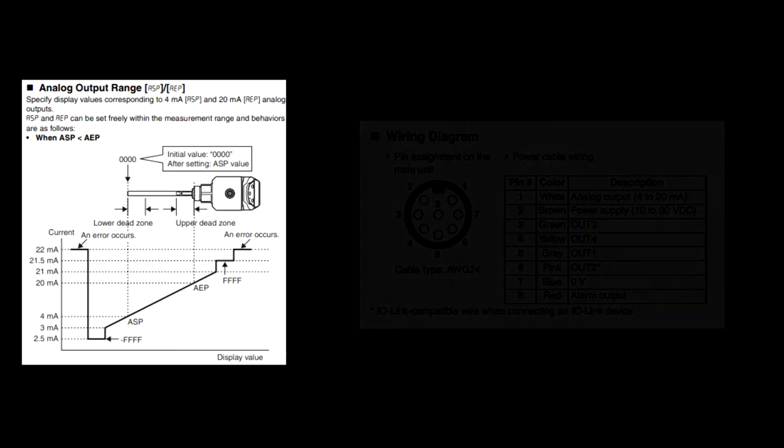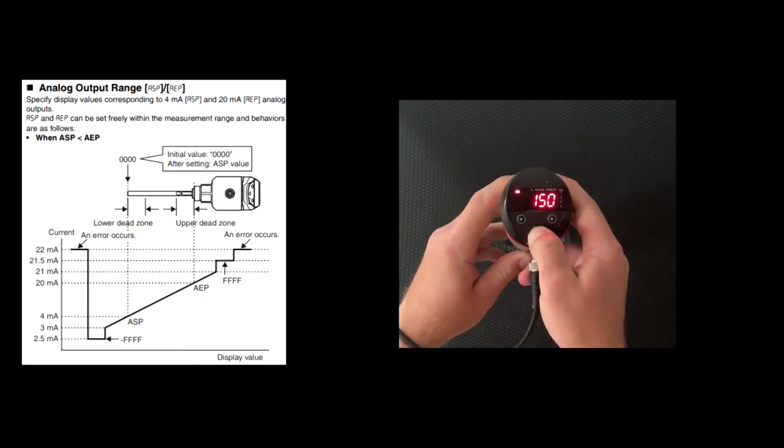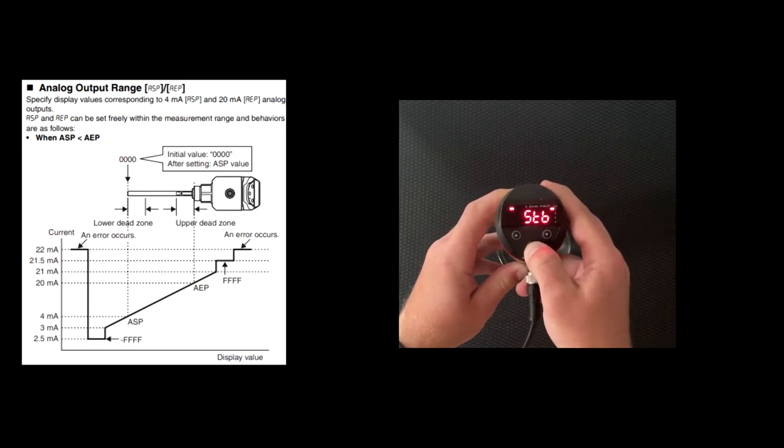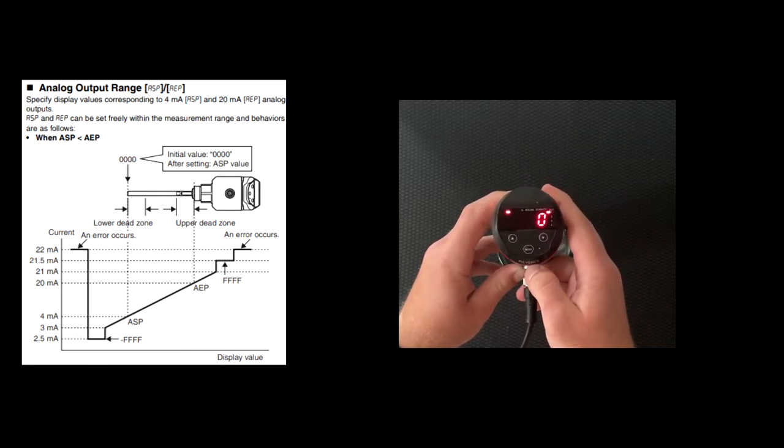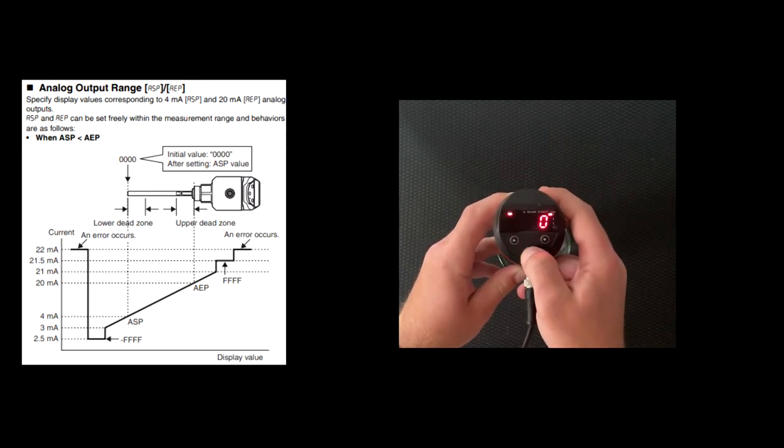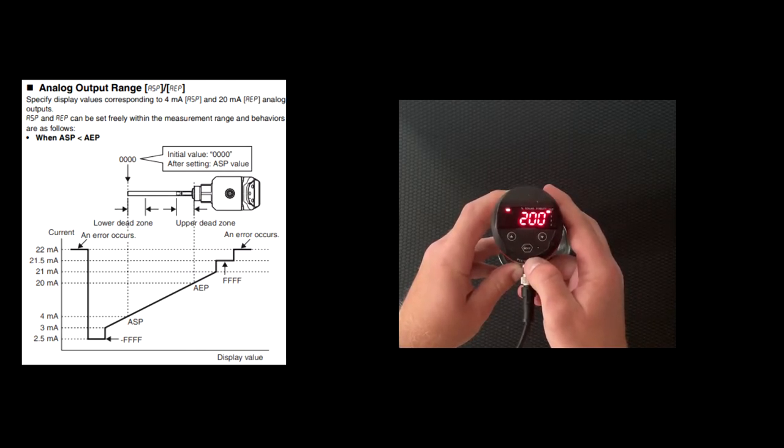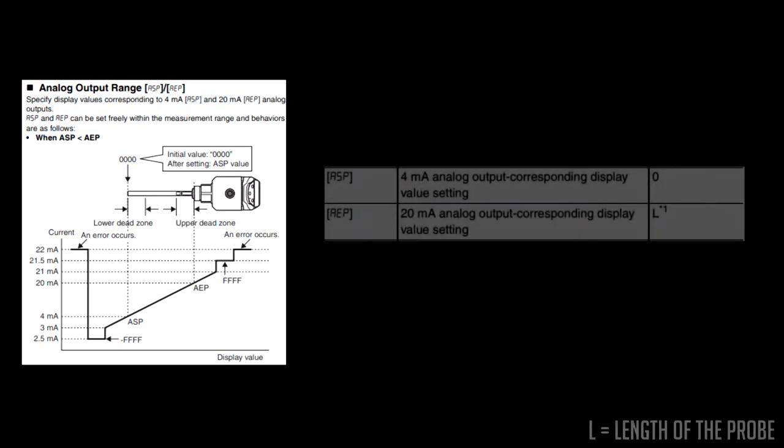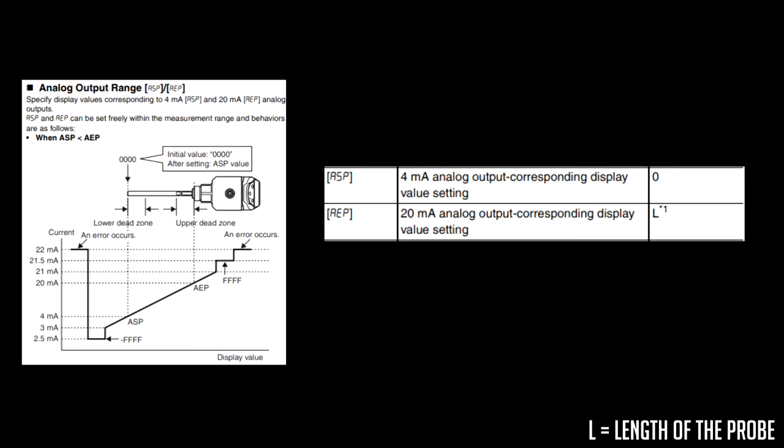Then, you'll just need to go into the basic settings, cycle through all the different menu items until you get to End, cycle over to EF for extended functions, and then cycle through past STB until you see ASP. ASP is going to be your 4 milliamp signal, and AEP, which will be just after that, will be your 20 milliamp signal. You may scale these however you'd like, but by default ASP, or your 4 milliamp signal, will be set to 0, and AEP, your 20 milliamp signal, will be set to the entire length of the probe.